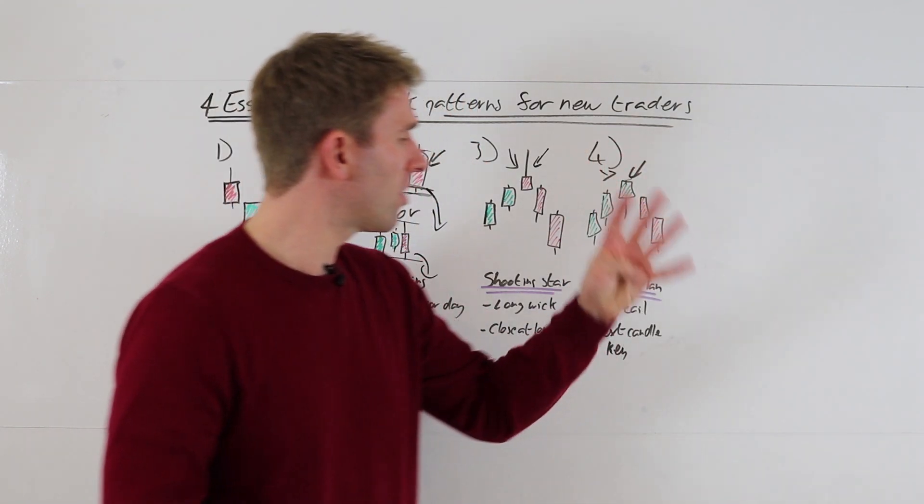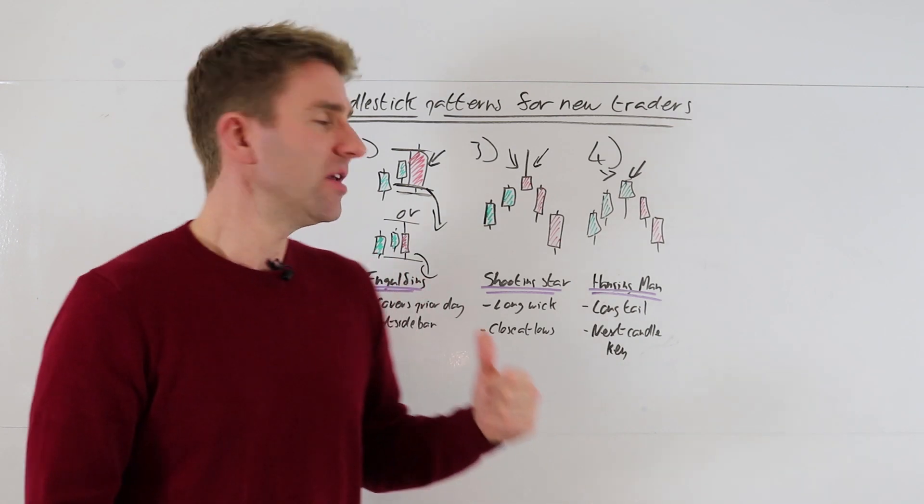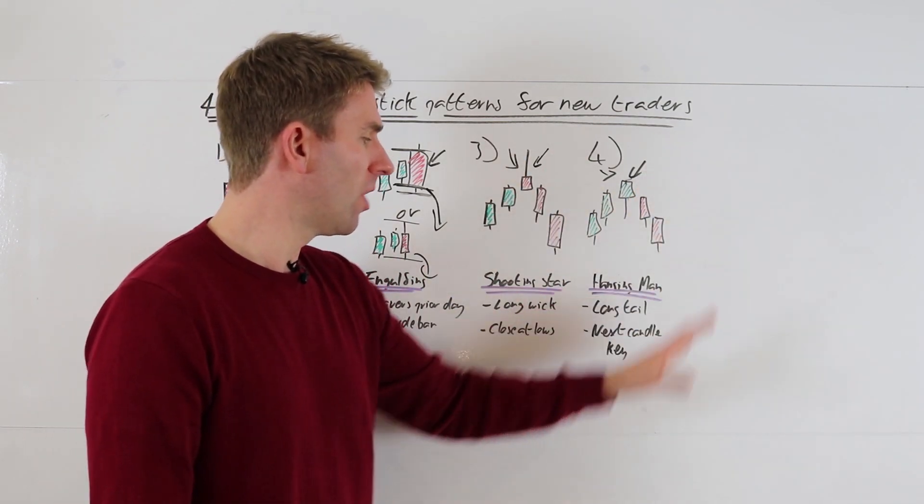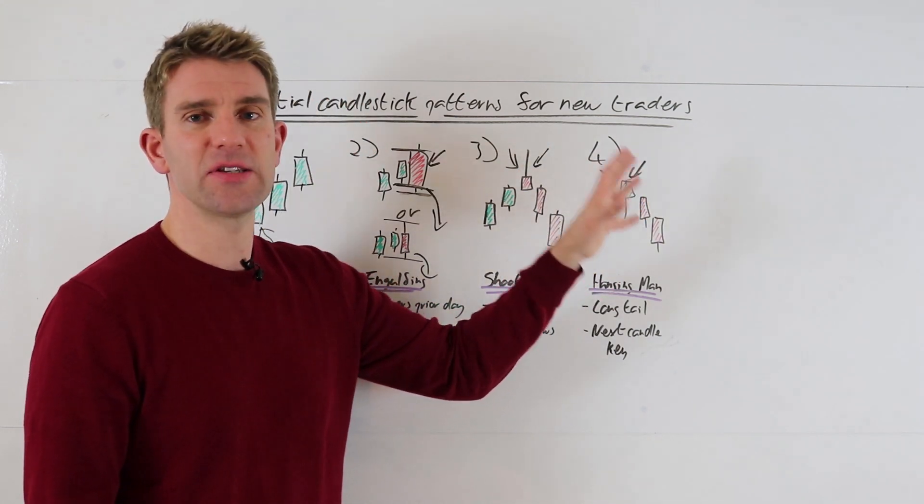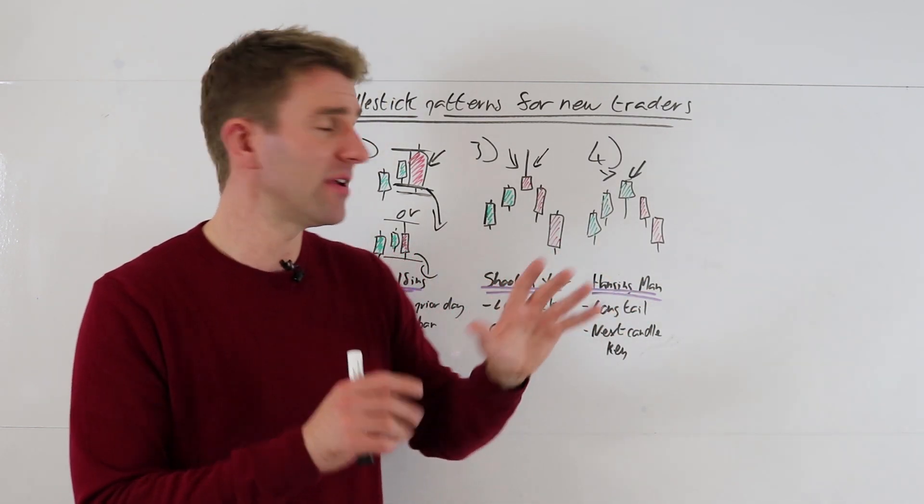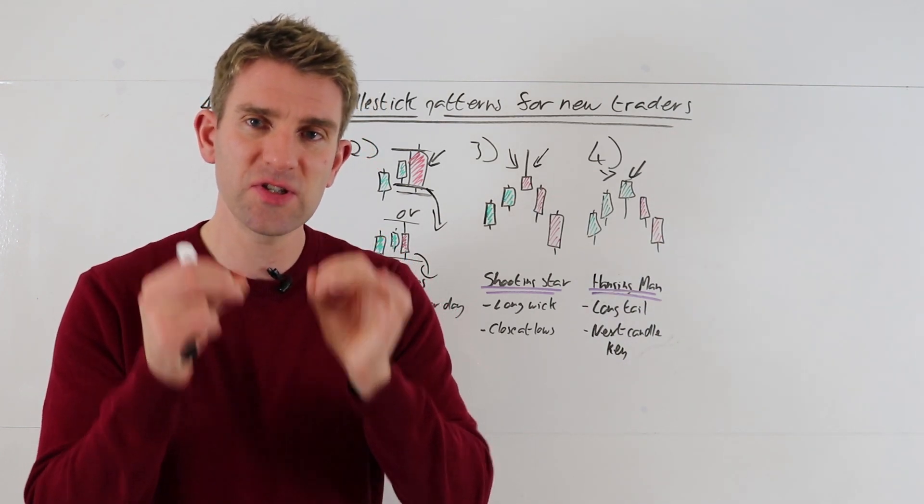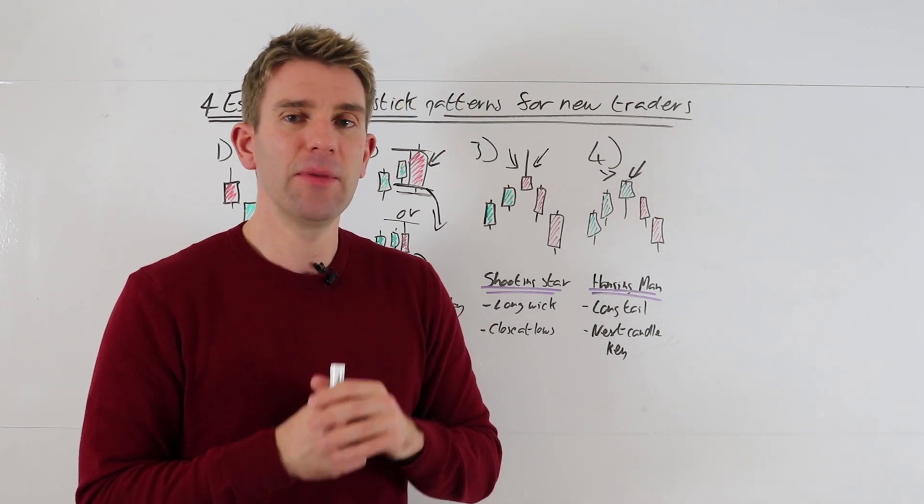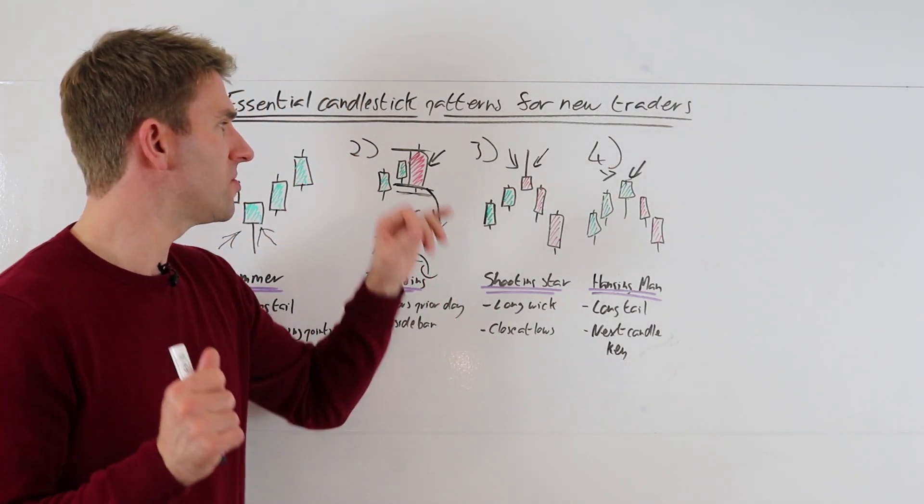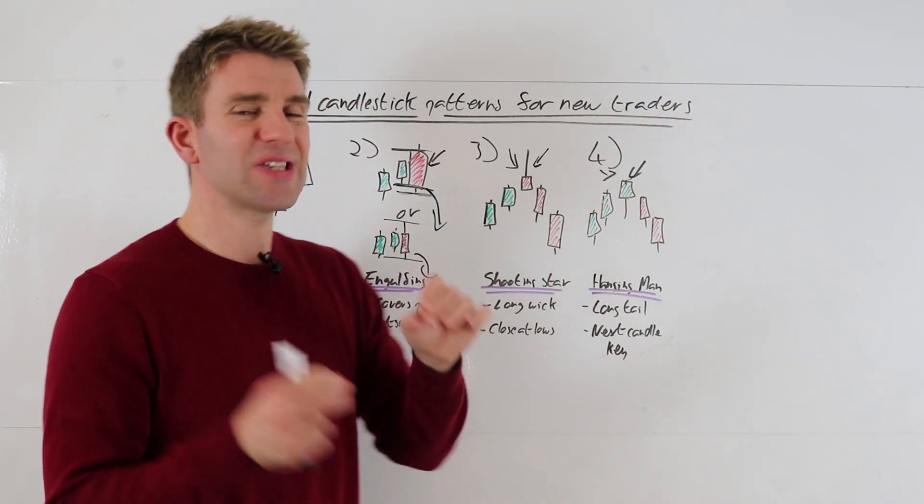Number four, we've got the hanging man. Hanging man is like a hammer but at the top of the market. In other words, you see this at the top. Again, same attributes: long tail, short body. Why I don't like this so much—the theory of this is that you've tested lower, yes you've closed higher, but it's a short glimpse that maybe there's some sellers there because you've pushed quite low here. And yes, you've closed at highs, but you've got a little glimpse that there are some sellers there. Sure, it's not quite as nice as perhaps some of these which are closing at lows and doing a different type of thing, but it shows you there's some sellers there.